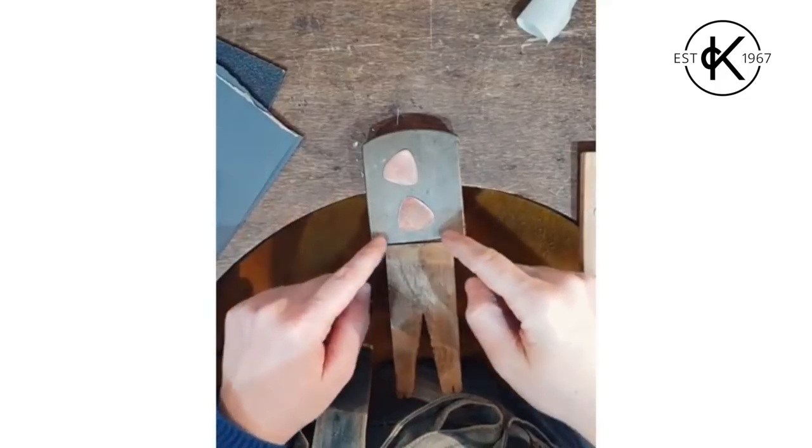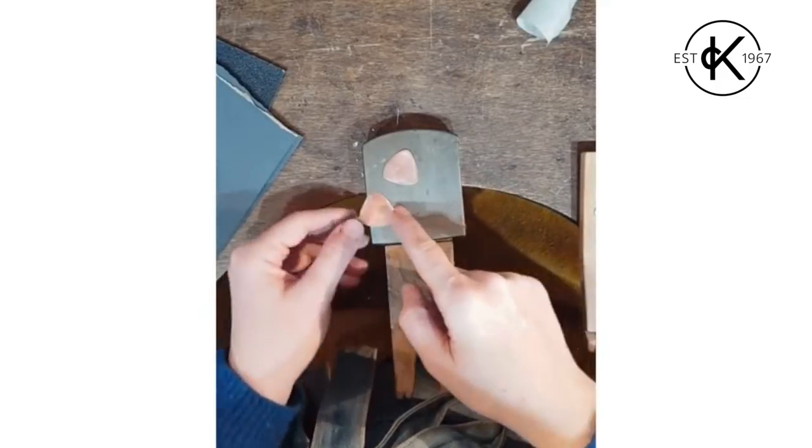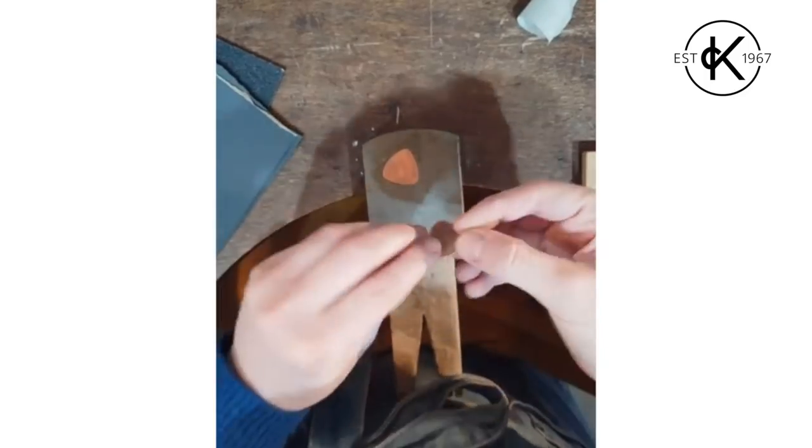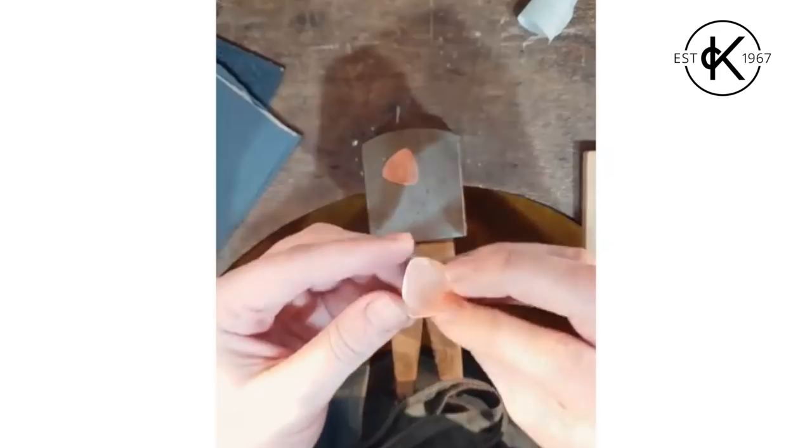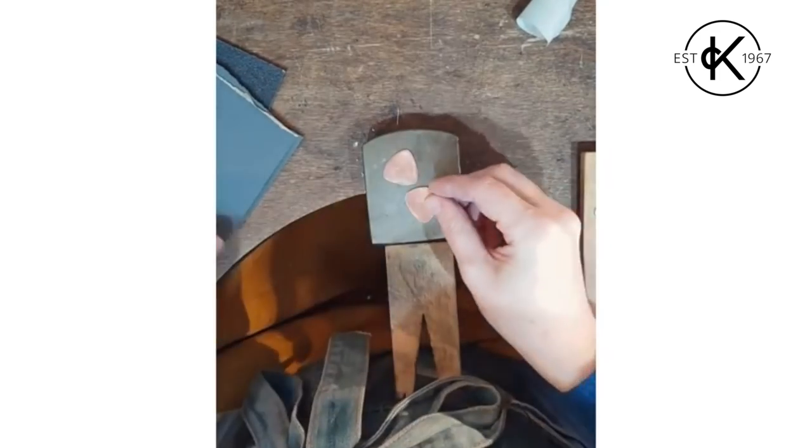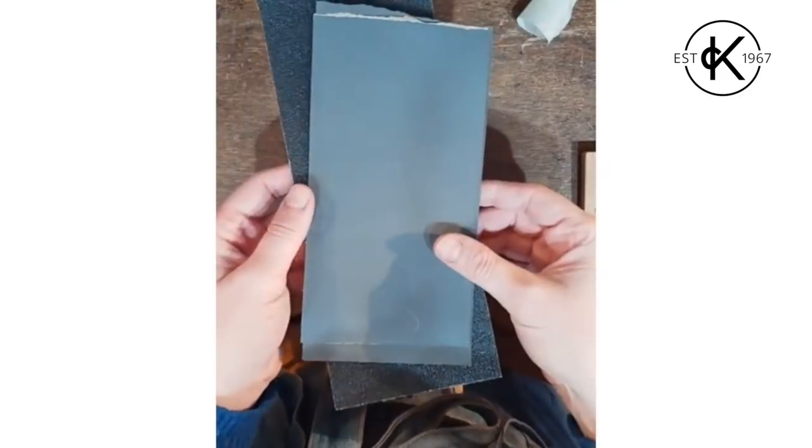Once you've smoothed off the edges of your metal, you want to tackle the surface a little bit. Quite often when you buy metal, you end up with little hairline scratches all over it, and certainly when you've been knocking it around in the studio, it picks up scratches. Depending on how scratched the surface is depends on how much sanding you're going to need to do.